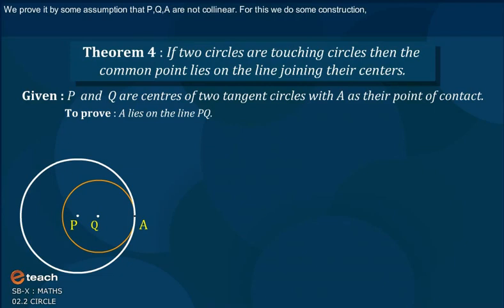We prove it by some assumption that P, Q, A are not collinear. For this we do some construction.